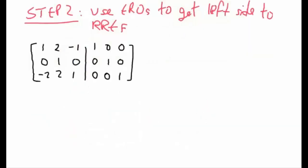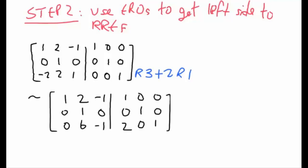After you've set up this special augmented matrix in step 2, what we're going to do is try to get this left-hand side to reduced row echelon form using elementary row operations. So let's start by using that leading one in the upper left corner to make a 0 in the bottom left. So we'll take row 3 plus 2 row 1s. That'll give us the following augmented matrix.